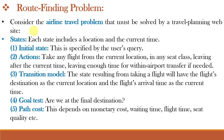The airline travel problem is about finding the best way to fly between cities. The goal is to choose the best route based on cost, time, number of stops, and seat availability. Airlines must also schedule flights efficiently to avoid delays and handle within-airport transfers if needed. And obviously the passengers want the fastest, cheapest, and the most comfortable travel option.